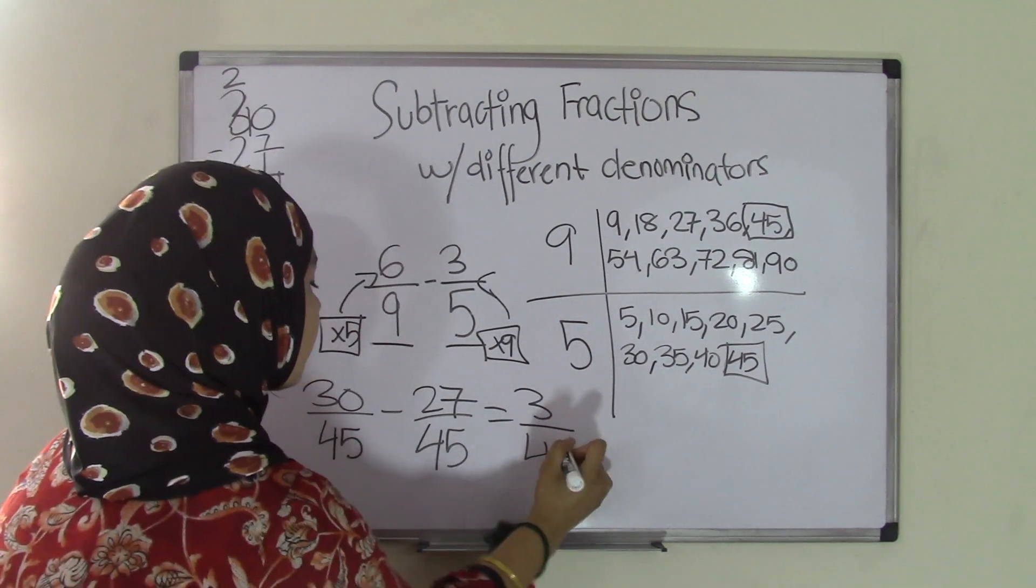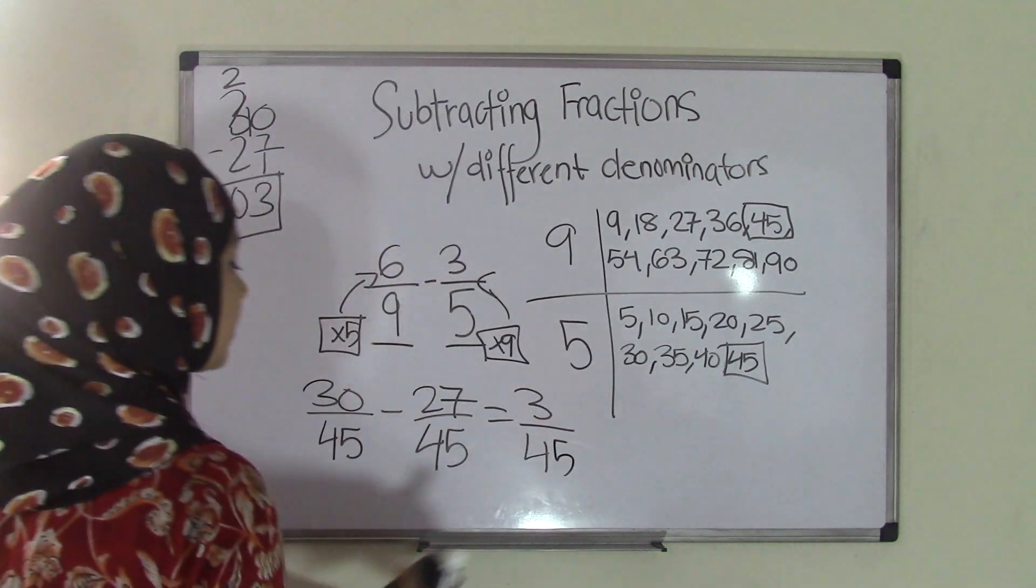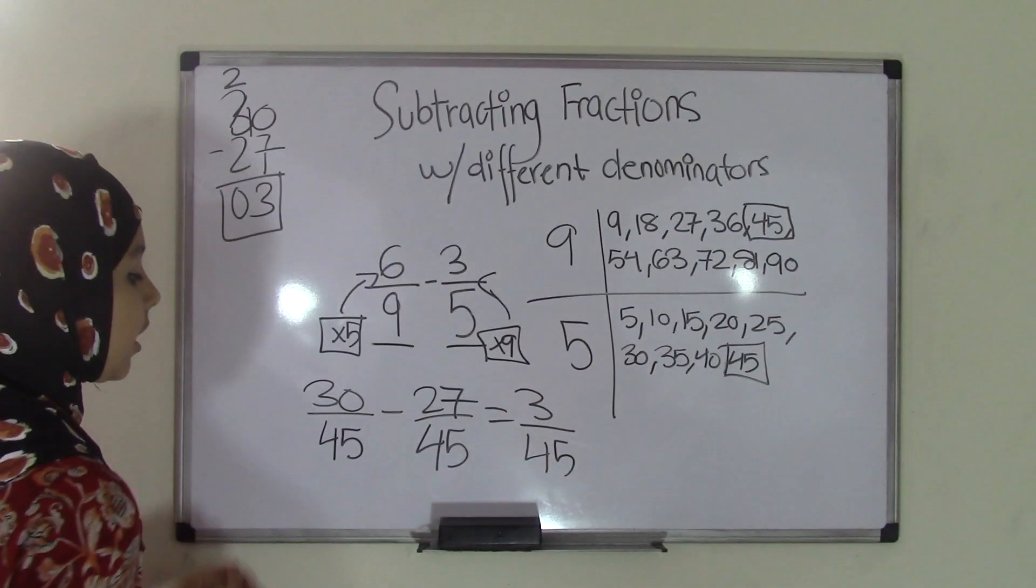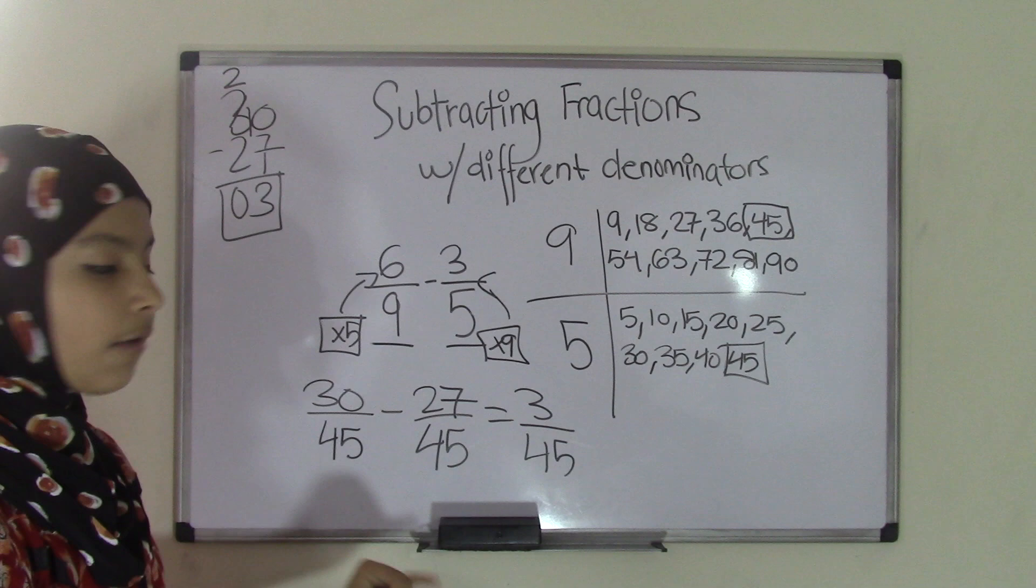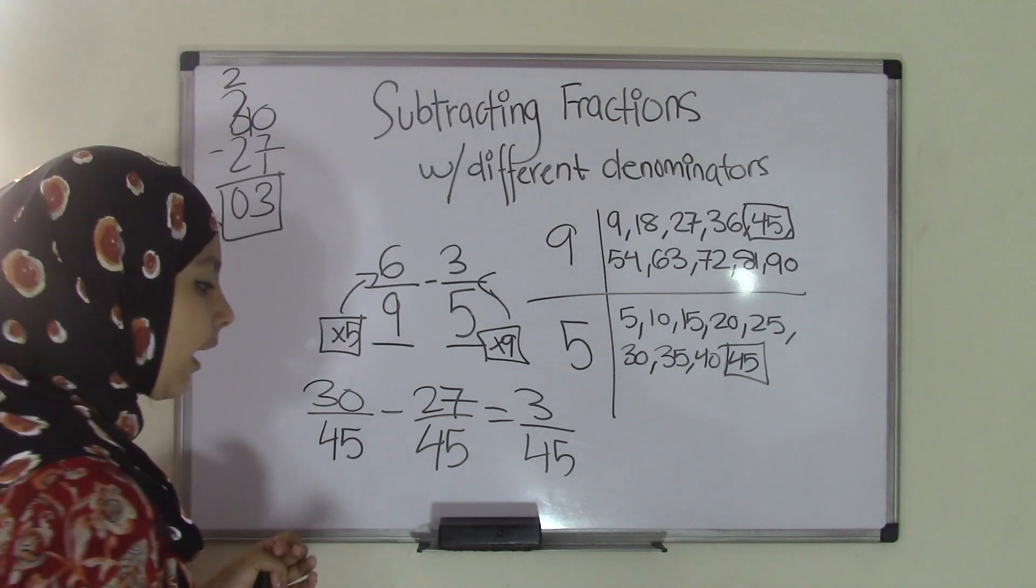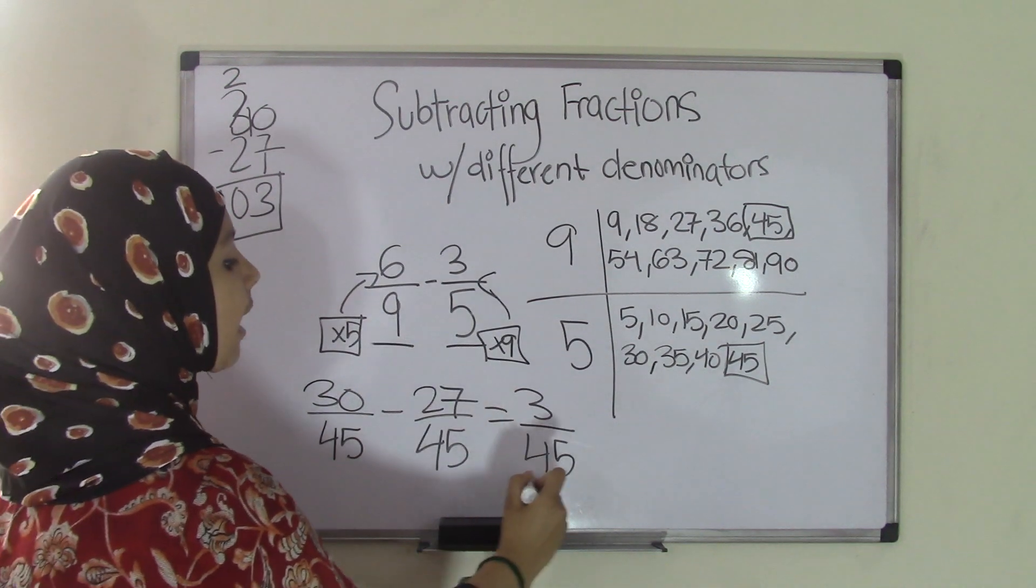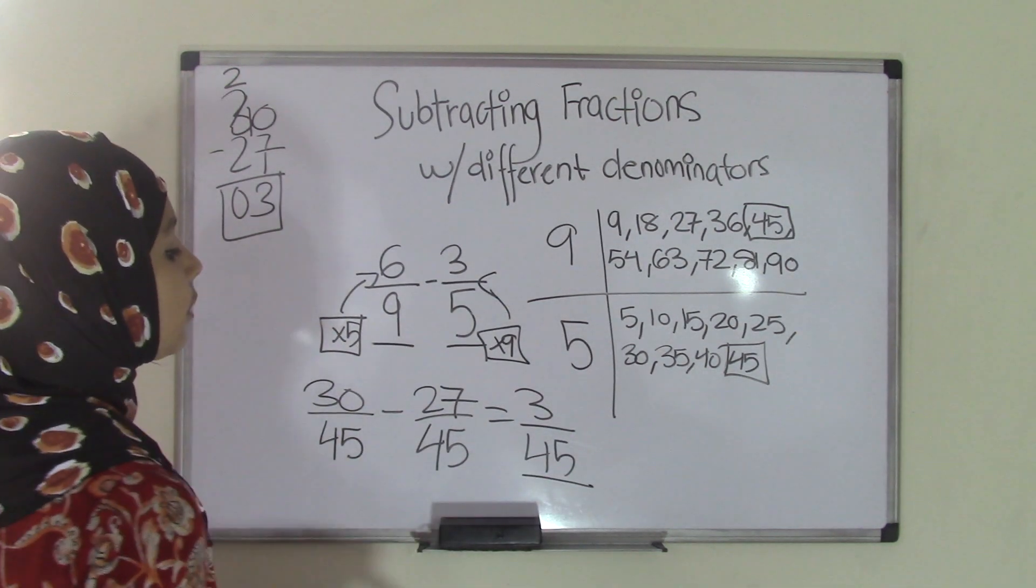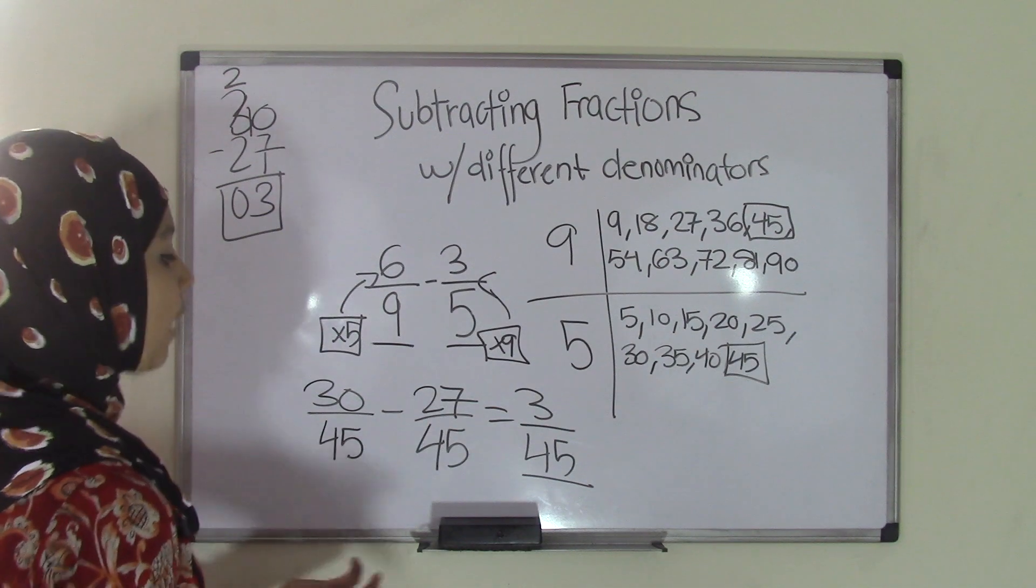Now as you can see, when I did my subtraction, I did not change the denominator. Because if I would have subtracted 45 minus 45, then I would have gotten a 0, and that's not really right. You keep the denominator as it is in both addition and subtraction. Only the numerator changes once you subtract or add.